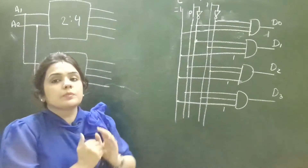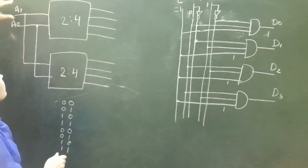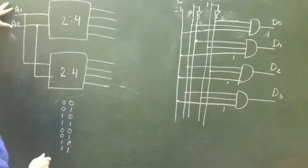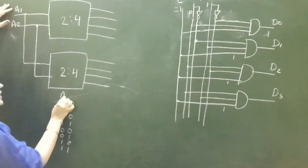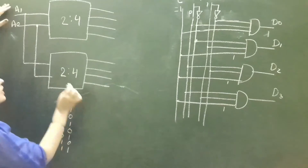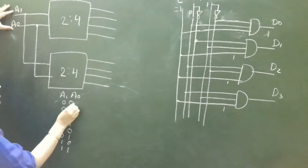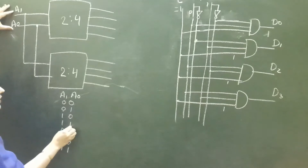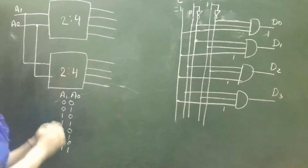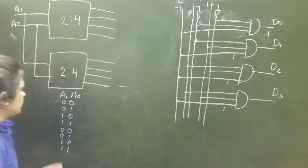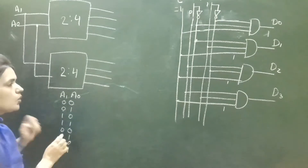For the first decoder, the possible values of A1 and A0 will be 00, 01, 10, and 11. For the second decoder also, the possible values of A1 and A0 will be 00, 01, 10, and 11.